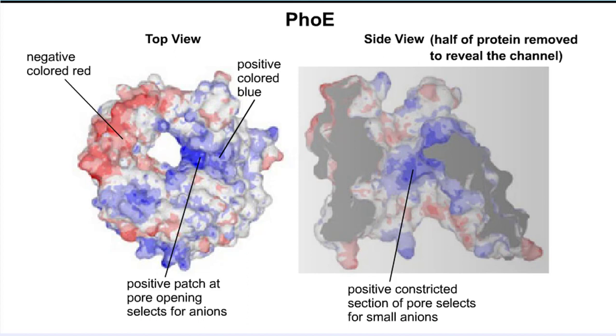A specific lysine protrudes into the channel, forming a positively charged patch that draws anions into the pore, as well as constricts the pore size so that only small anions flow through.